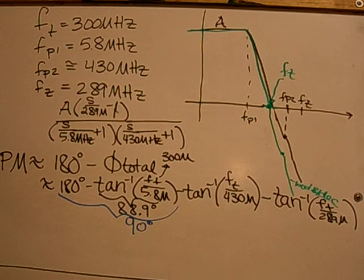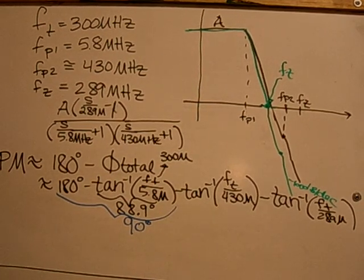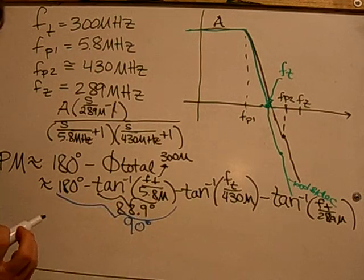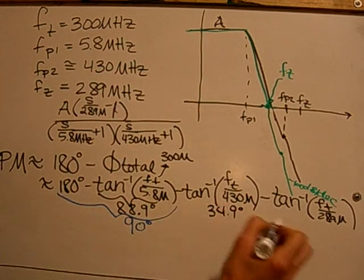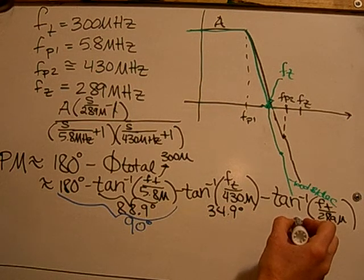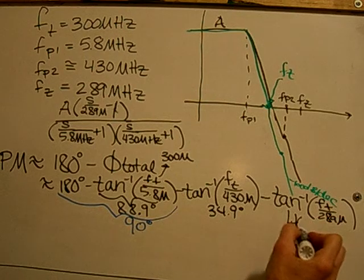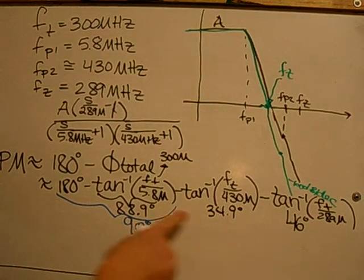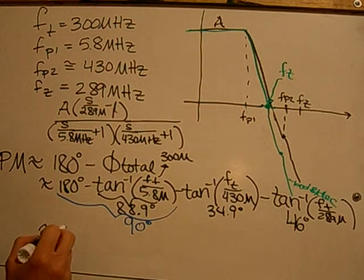Those values for the inverse tangent of F of T over 430 MHz, that's 34.9 degrees, and this one is 46 degrees. So all of this together gives approximately 10 degrees.